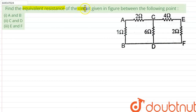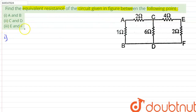Hello everyone. Find the equivalent resistance of the circuit given in the figure between the following points. The question is asking us to find out the equivalent resistance between the given points. First, we'll find out the answer for part one, which asks us to find the equivalent resistance between point A and point B.